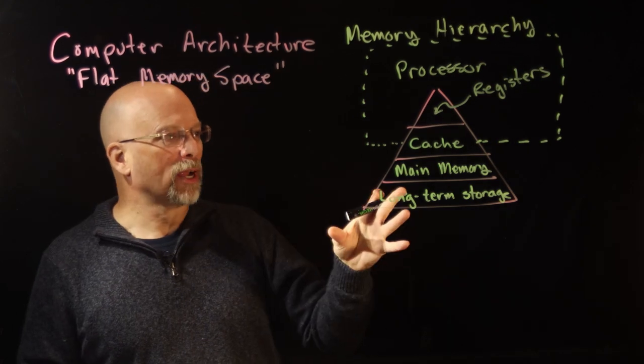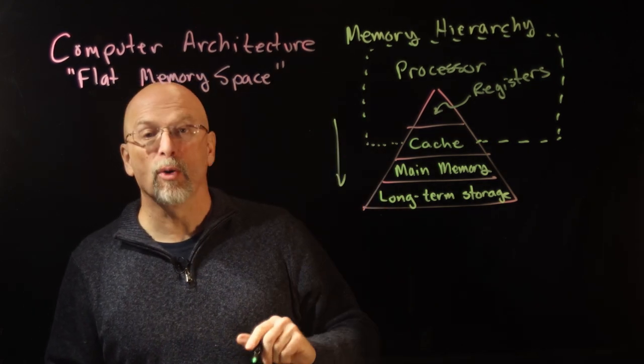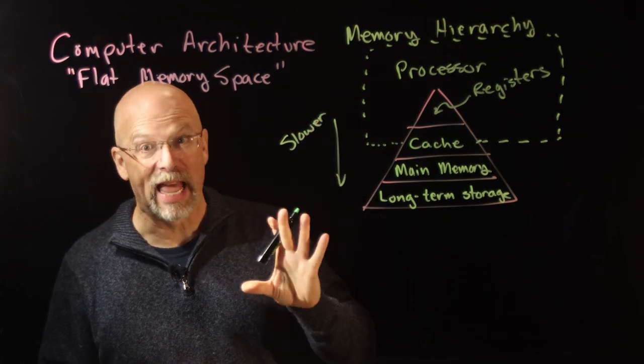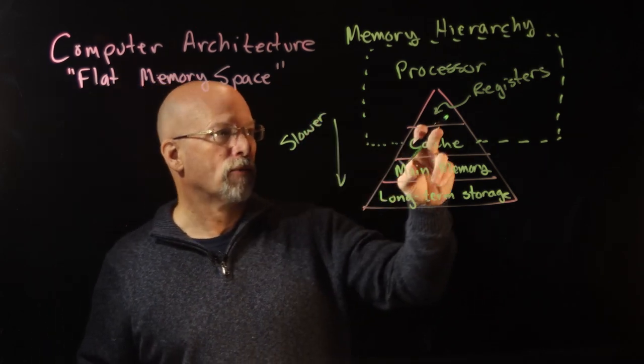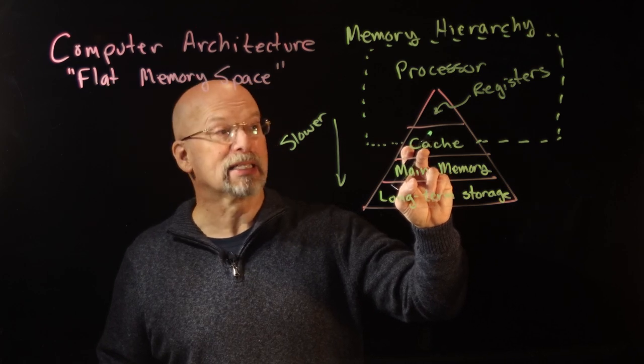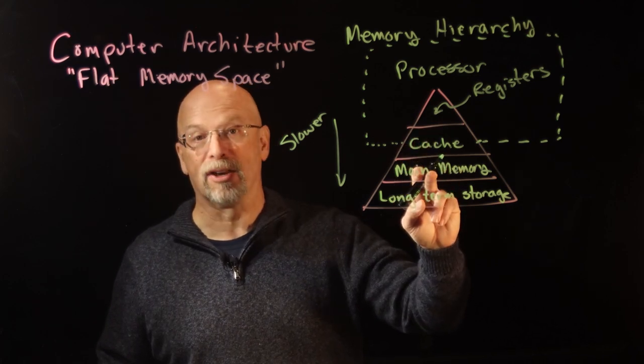The memory hierarchy—as you get further away from the processor it is slower, takes more time. For example, it may take three nanoseconds to get to the cache whereas it might take 30 nanoseconds to get to main memory.